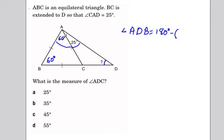So it'll be 60 plus angle BAD. Angle BAD equals 85 degrees, that's 60 plus 25. So this is going to be 60 plus 85.